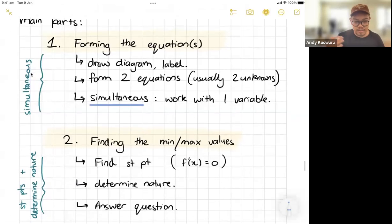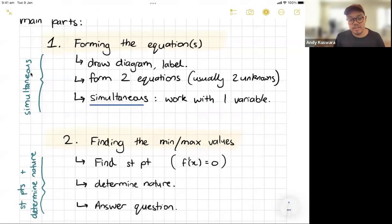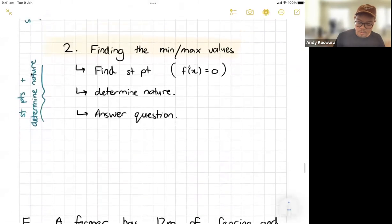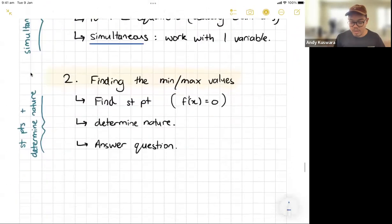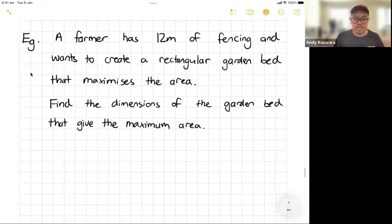The second part is you're going to find min or max values. So once you've got the equation it's going to feel a lot like find a stationary point, determine nature, and then the last part is making sure you answer exactly what the question wants. Now to break this down we're going to try actually doing this. So we're going to try forming the equation and then we're going to try finding the min max values and I'm going to do it with that very simple question that we had before.